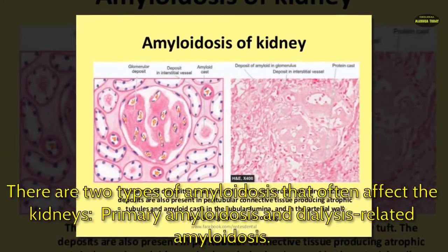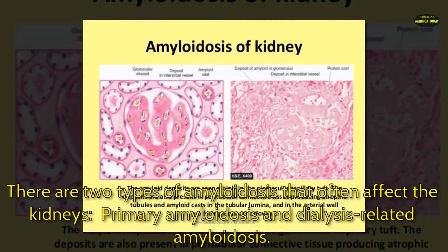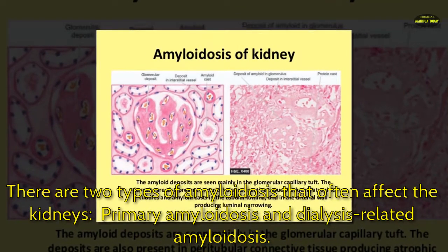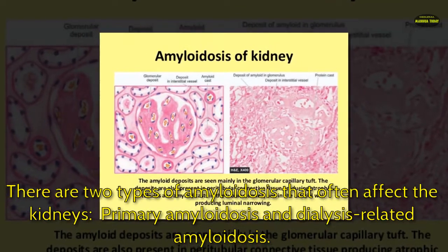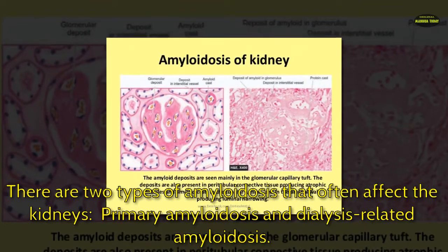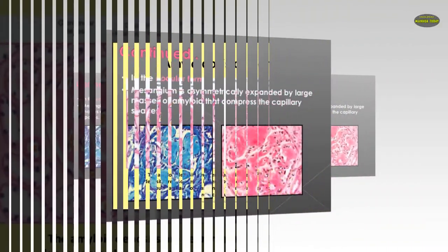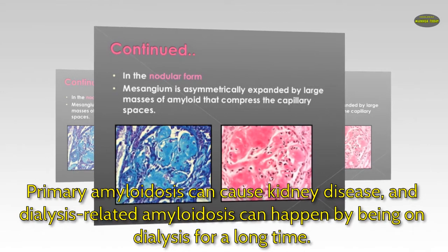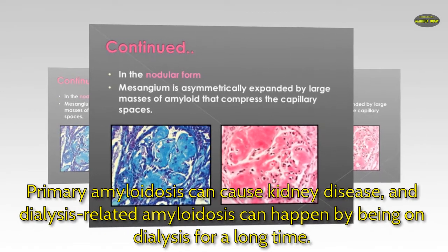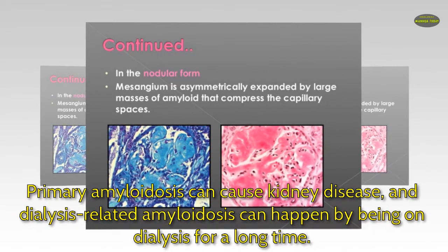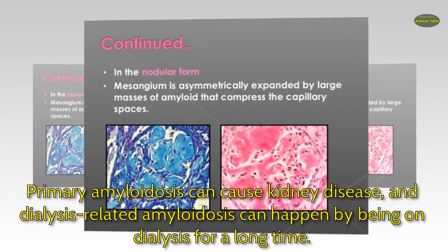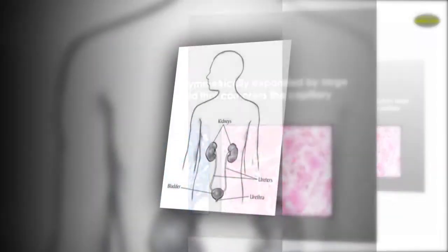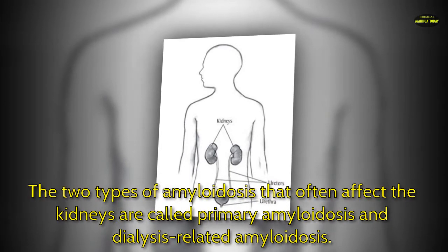There are two types of amyloidosis that often affect the kidneys: primary amyloidosis and dialysis-related amyloidosis. Primary amyloidosis can cause kidney disease, and dialysis-related amyloidosis can happen by being on dialysis for a long time.